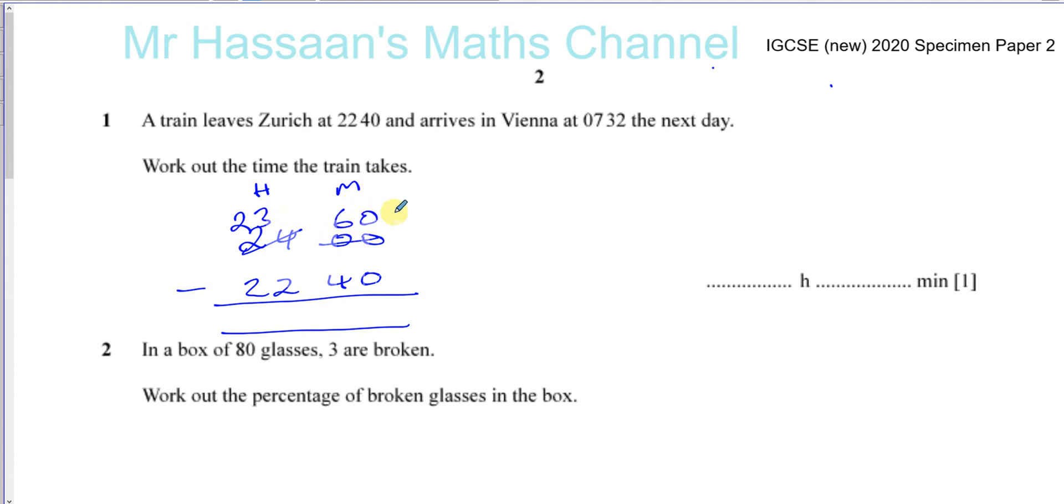So you write 60 in the minutes column. So you take one hour from here and made it 60 minutes on the minutes column. 60 minus 40 is 20. 23 minus 22 is 1.